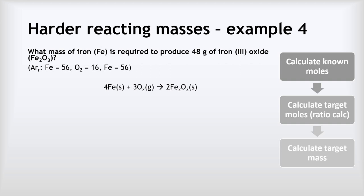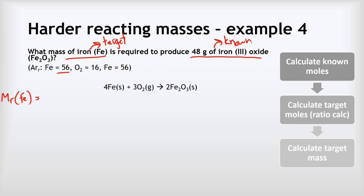This is a little harder because we aren't given the Mr values — we need to find those ourselves. Iron is our target and iron(III) oxide is our known substance. The Mr of Fe is simply the atomic mass: 1 times 56, so it's just 56.